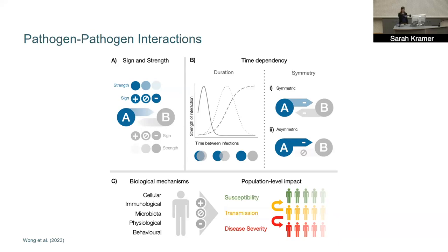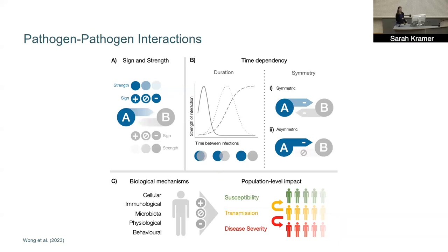There are several important features we care about when talking about interactions. The first is the sign and strength of the interaction. A positive interaction means that being infected with pathogen A makes you more likely to become infected with pathogen B, or makes it more severe. A negative interaction is the opposite — being infected with pathogen A makes you less likely to get pathogen B. The strength refers to the extent to which infection with pathogen A enhances or reduces susceptibility or severity to pathogen B.